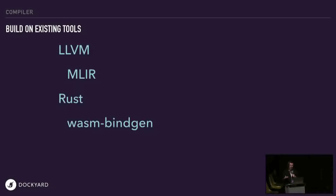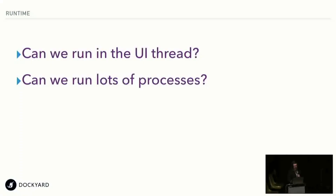While WebAssembly can only pass integers back and forth, you can't actually call a DOM API easily, but Lumen hides that problem from us. One of the open questions when we were developing Lumen to run in the browser was: can the UI thread support running lots of processes? We were concerned that scheduling all the processes would lock up the UI thread and make the page unresponsive.